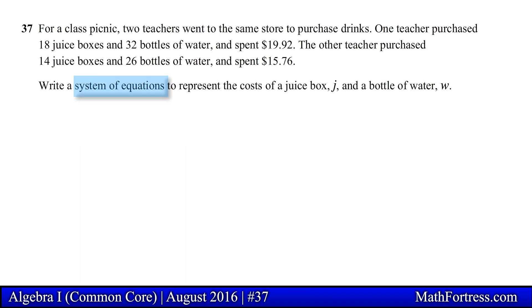Let's start by writing out the system of equations. Using the facts of the problem, we know that our variables are going to be the price of the juice box j and the bottled water w.